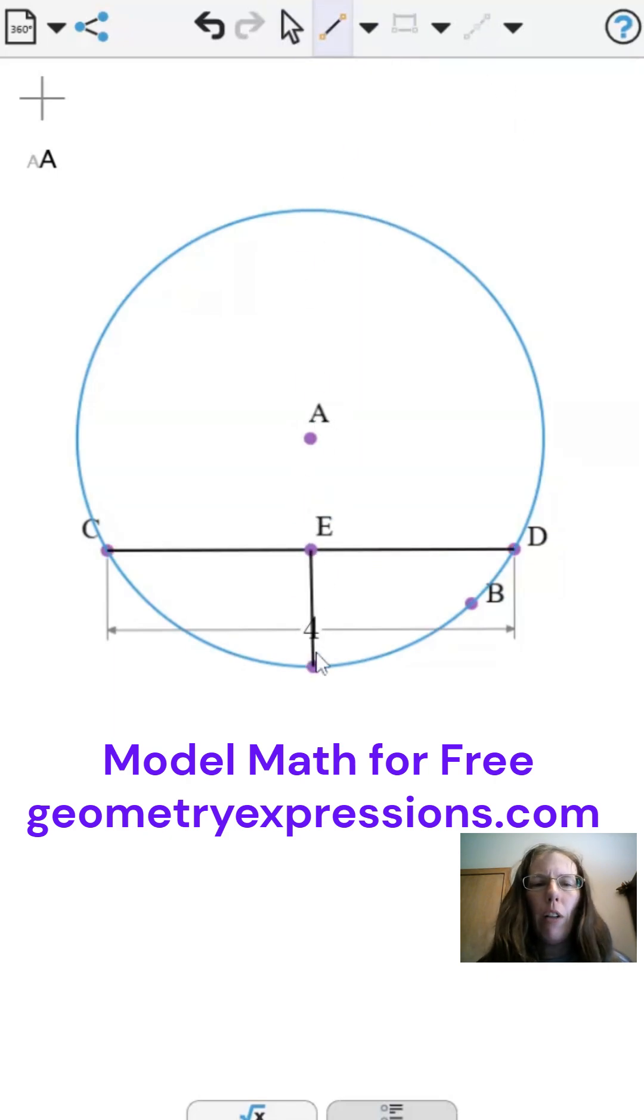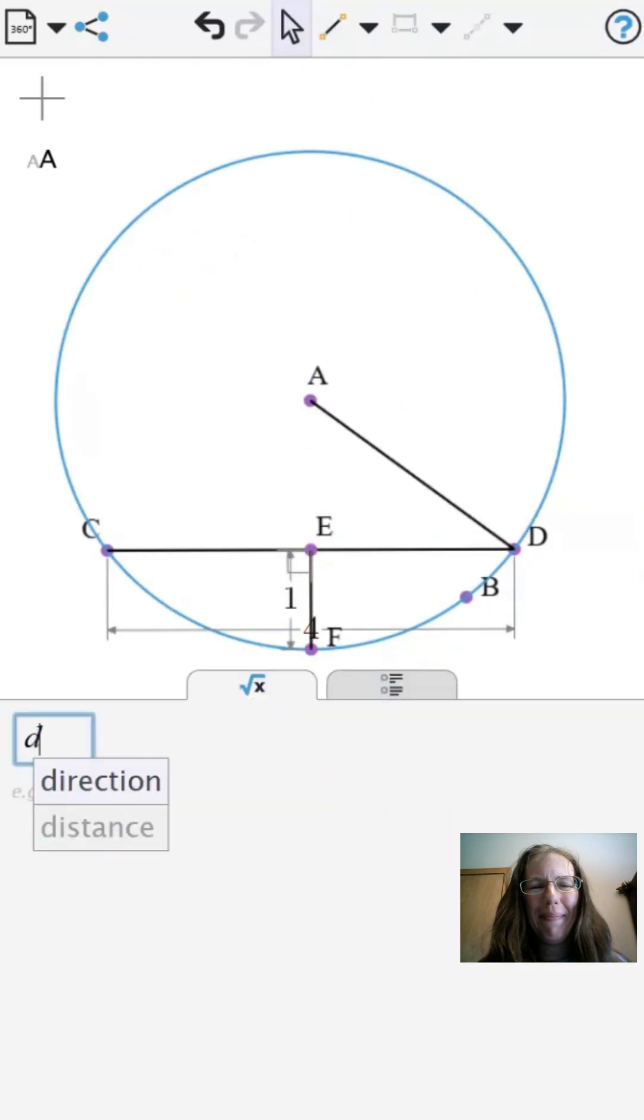We will draw the model and solve it by hand and with GXWeb. GXWeb finds the radius to be 5 over 2.